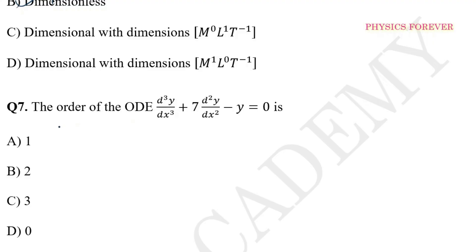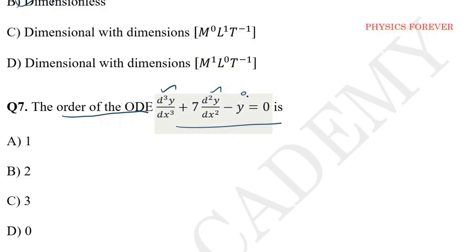Question number 7: The order of an ordinary differential equation — which one is correct? Order is 3 here, order is 2 there, and there is no order for another. The order is defined as the highest derivative present. Among these, option C is correct — the highest derivative is d³y/dx³, so option C is correct.